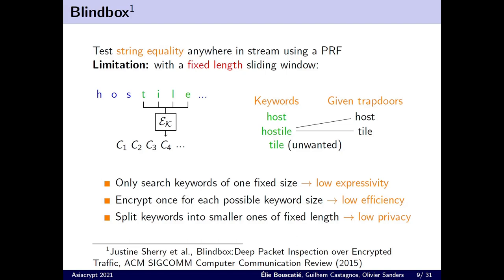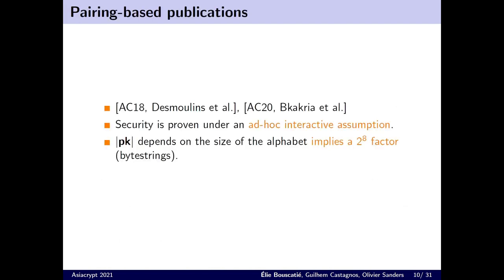If we decide to split longer keywords into smaller strings, the long list of SNORT with more than a thousand patterns shows us that the service provider can now learn a lot of extra information. In order to encrypt with a granularity of one symbol instead of strings and still be able to perform pattern matching, most recent solutions use bilinear pairings. Two papers have been published, one at AsiaCrypt in 2018, and one at AsiaCrypt in 2020. But their security is only proven under the same very strong interactive assumption, and the size of their public key depends on the size of the alphabet, which implies a factor 2 to the 8th, as the patterns are byte strings.